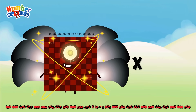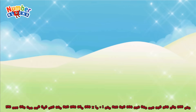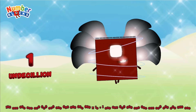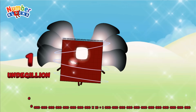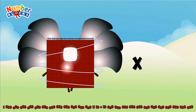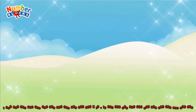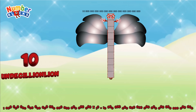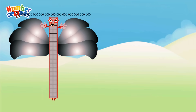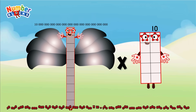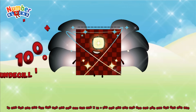100 decillion multiplied by 10 equals 1 undecillion. 1 undecillion multiplied by 10 equals 10 undecillion. 10 undecillion multiplied by 10 equals 100 undecillion.